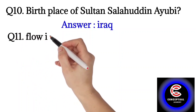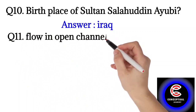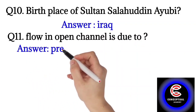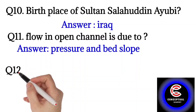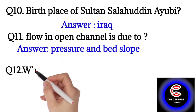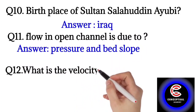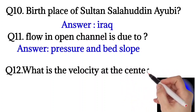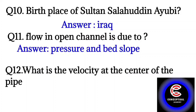Question number eleven: flow in an open channel is due to pressure and bed slope both. Question number twelve: what is the velocity at the center of the pipe? At the center of the pipe, velocity is maximum, so the answer is maximum.